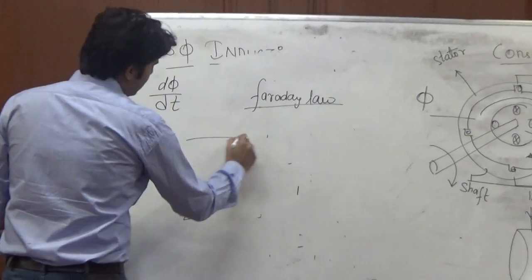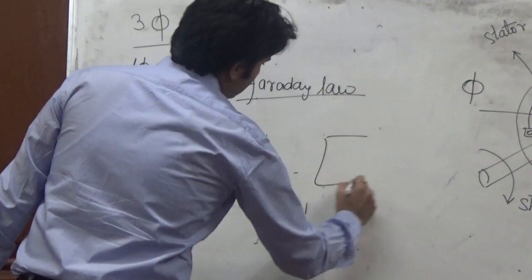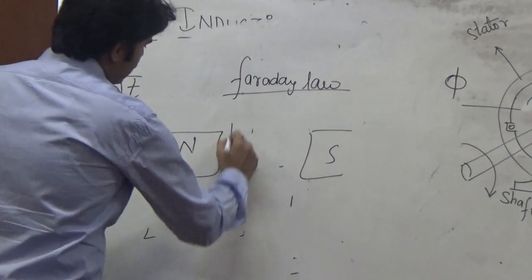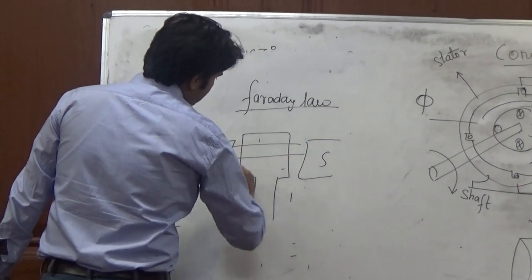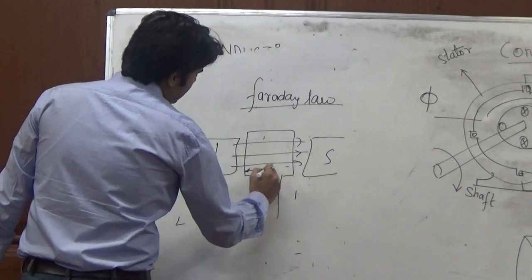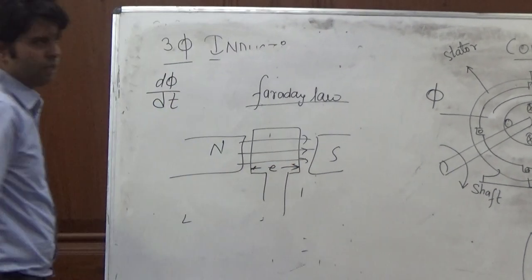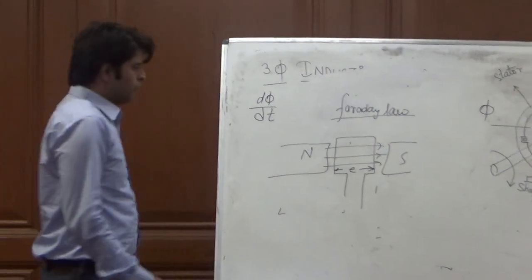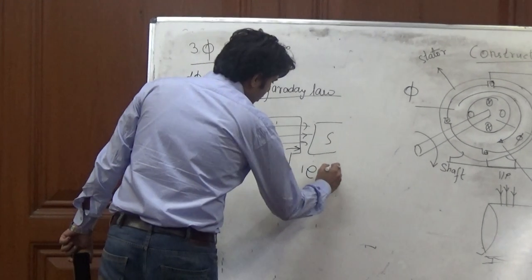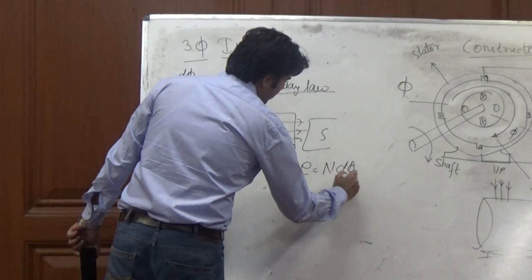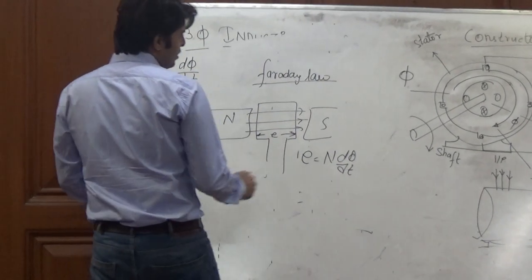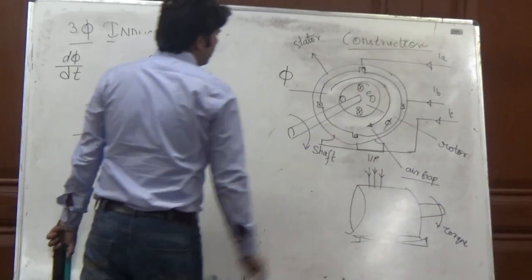That states that whenever a conductor is placed inside a rotating magnetic field or a changing magnetic field, EMF is induced in that loop. You can see this, E is equal to N dφ by dt. So now we have an EMF inside this rotor.